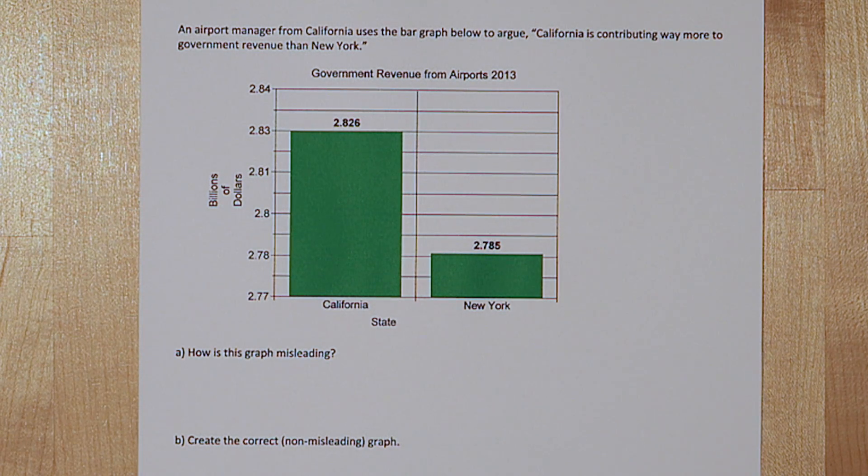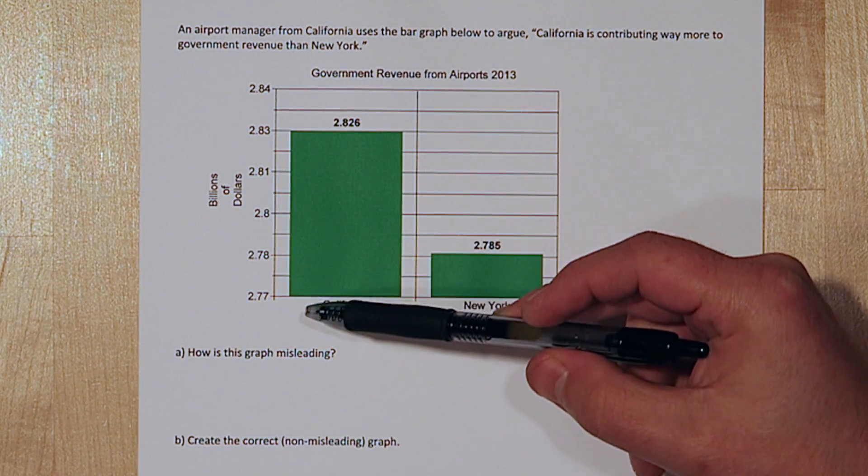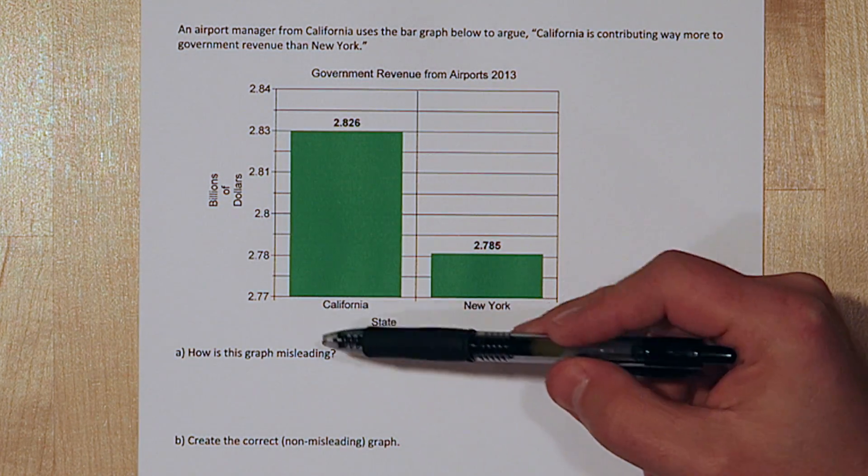The first thing we're trying to do is figure out why this graph is misleading. If you look closely at the y-axis, you'll see it doesn't start at zero. It's called a truncated axis.